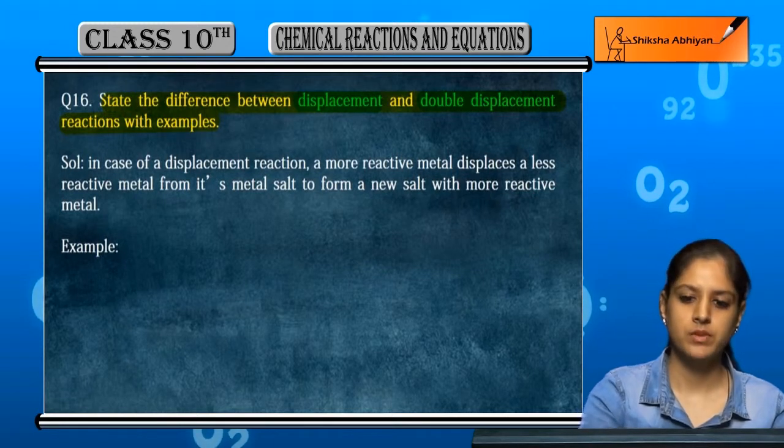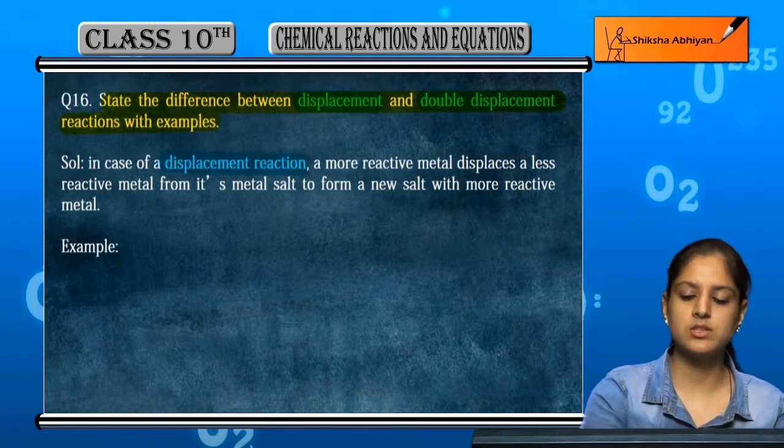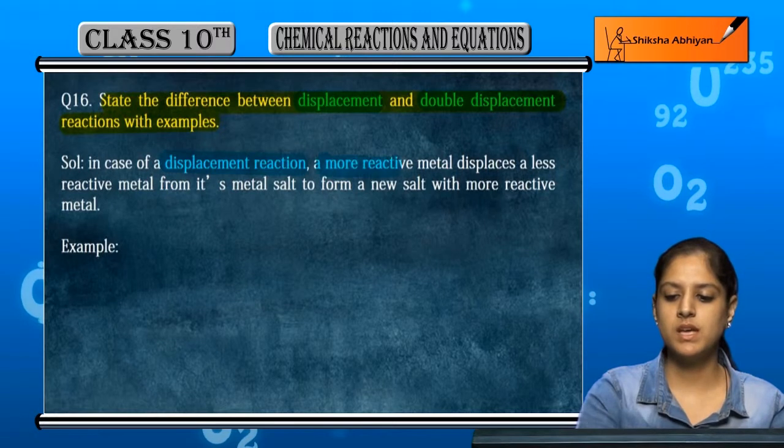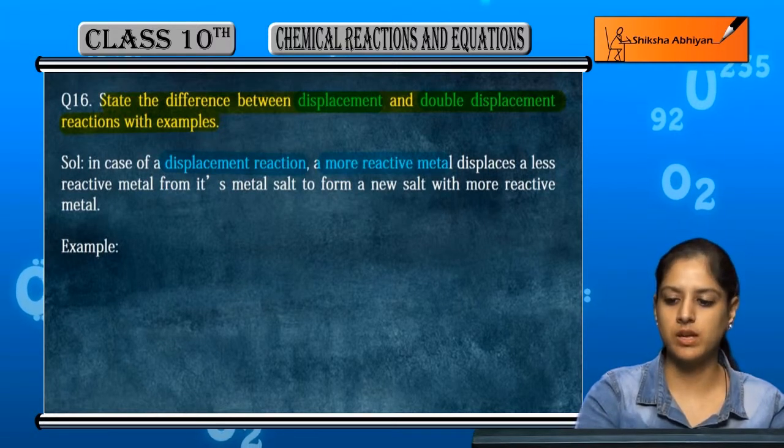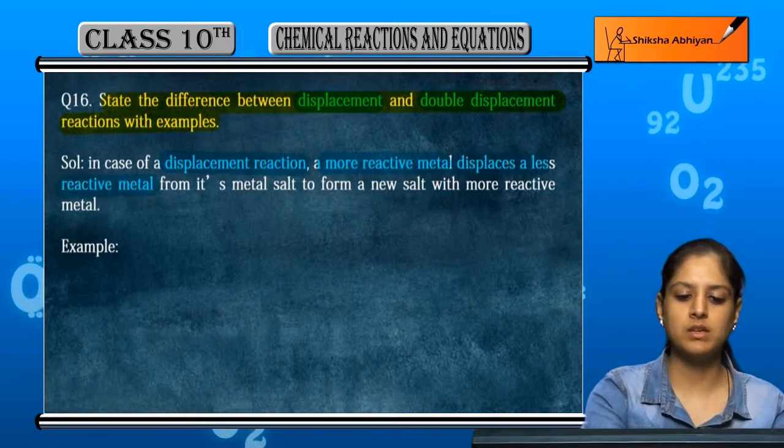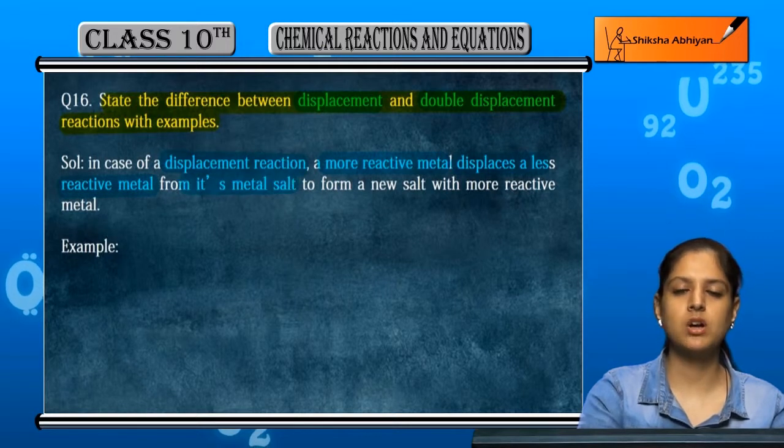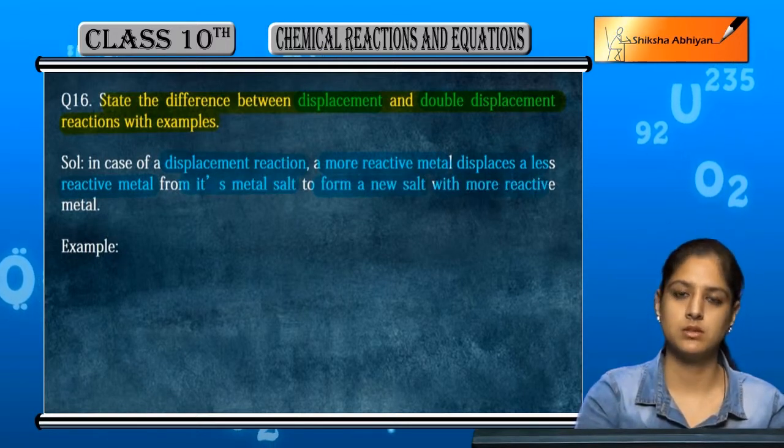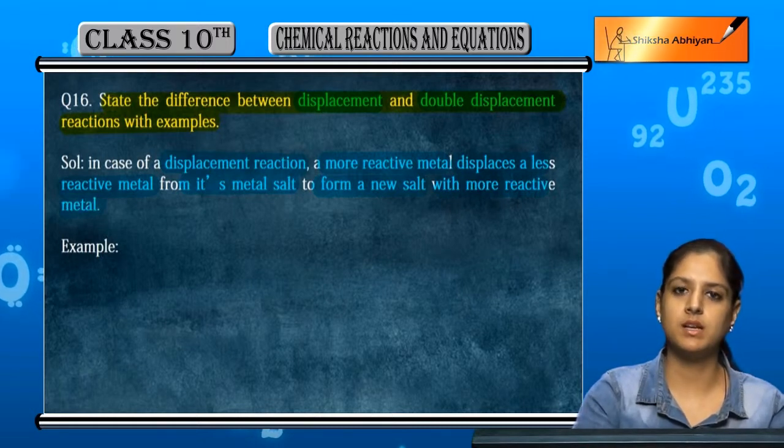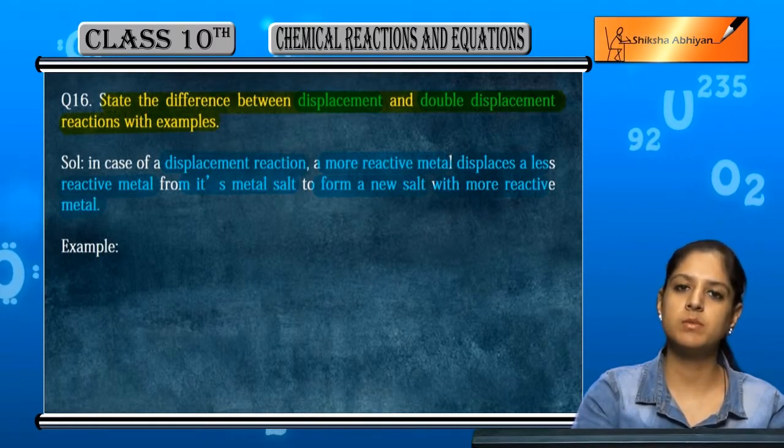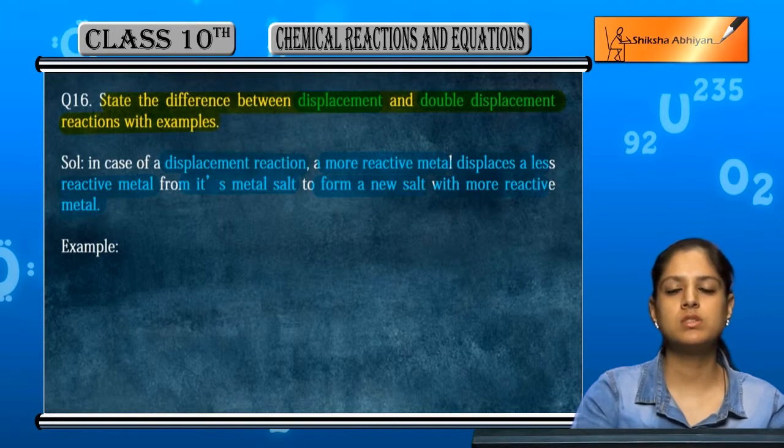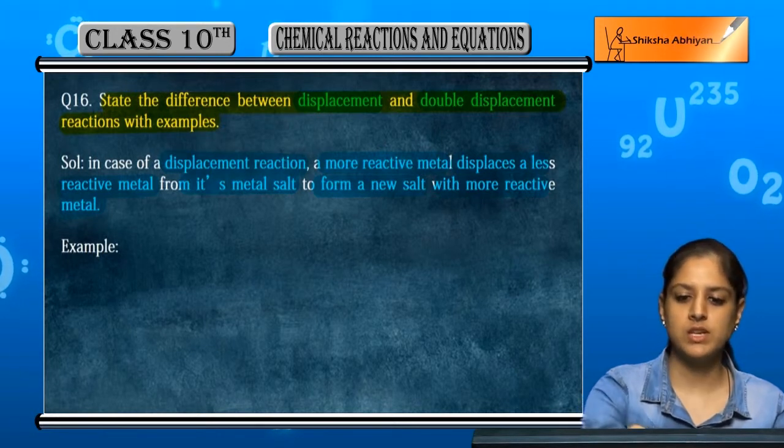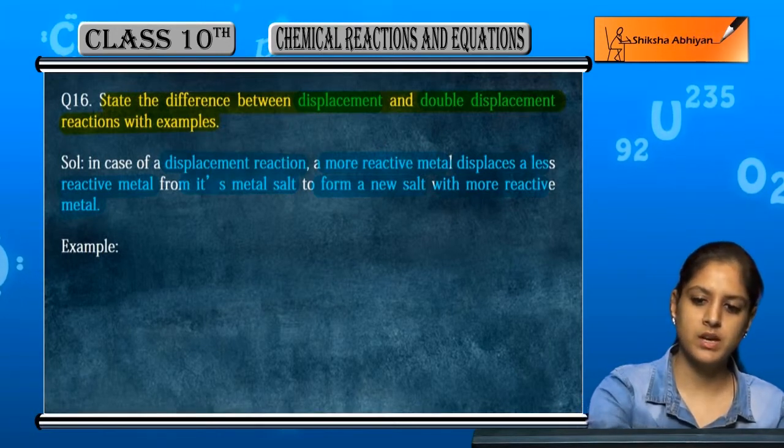What is different when we talk about displacement reaction? In a displacement reaction, a more reactive metal displaces a less reactive metal from its metal salt to create a new salt. The less reactive metal is removed from the salt and forms separately.